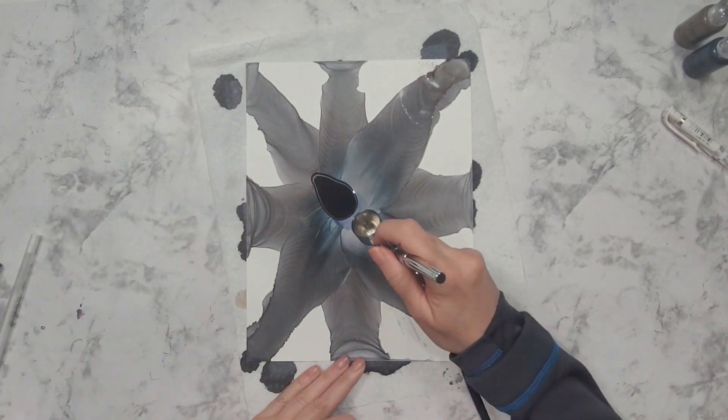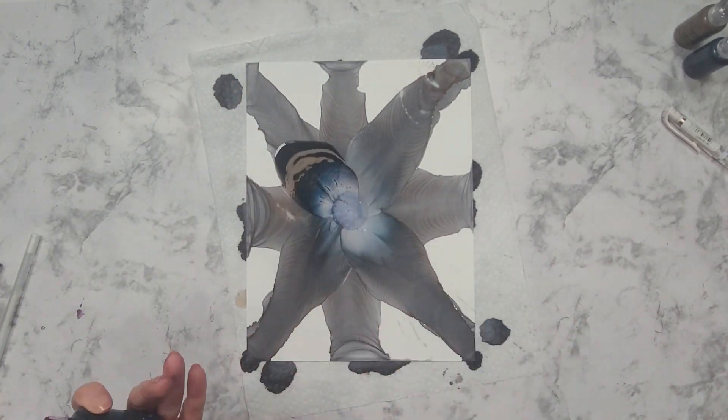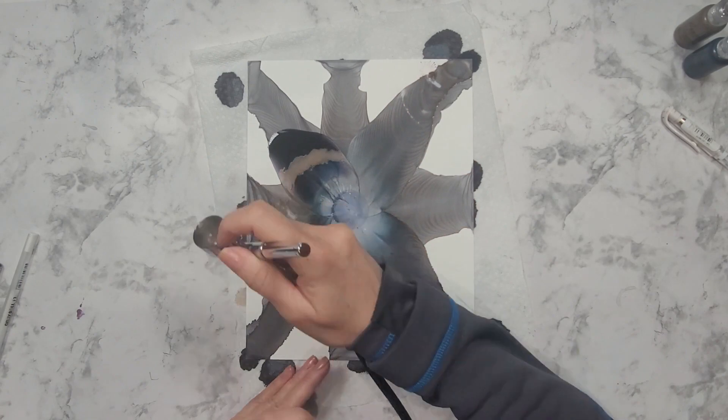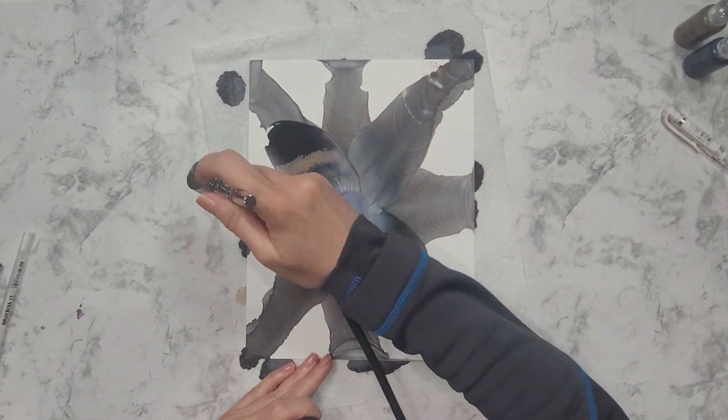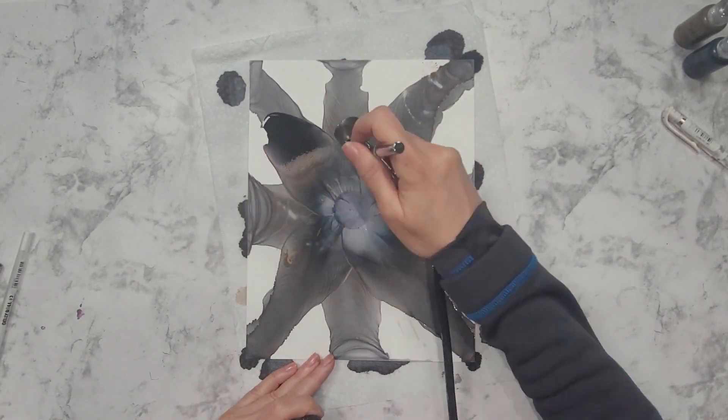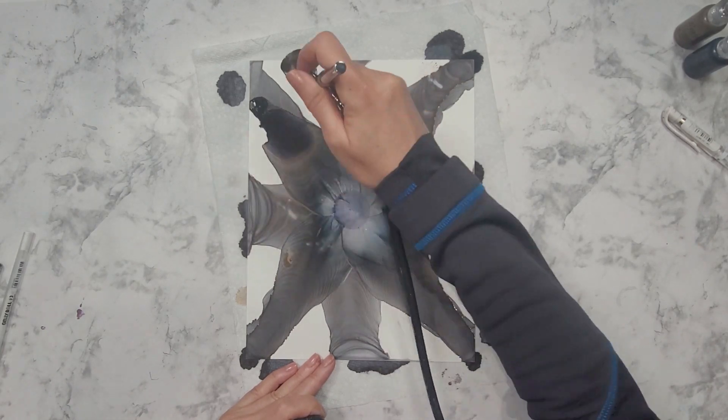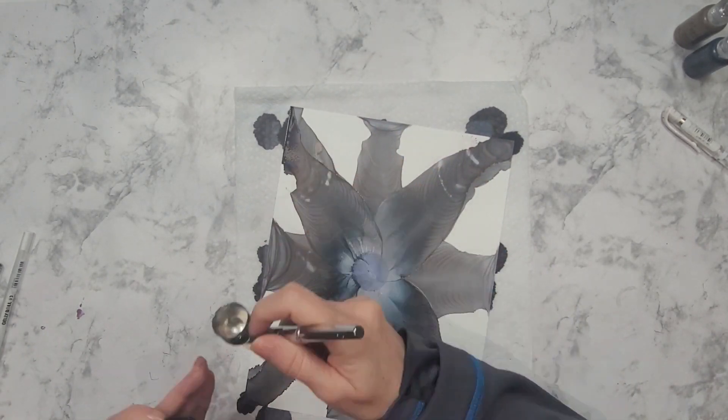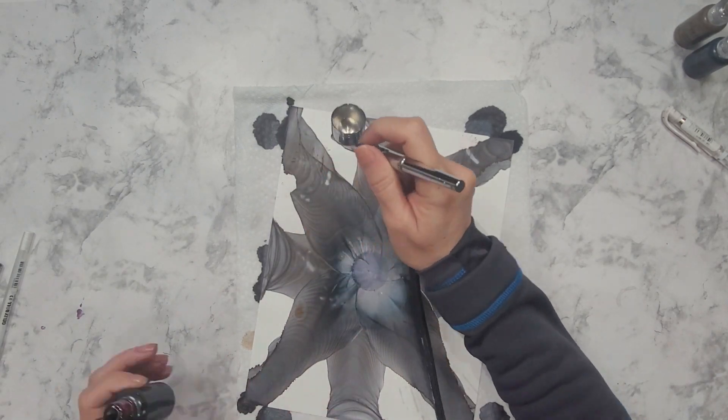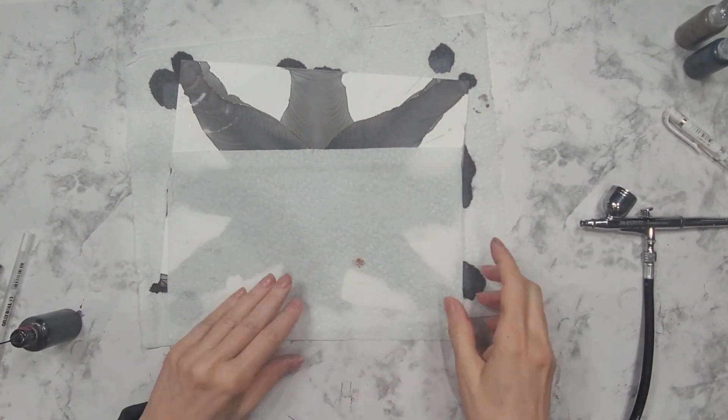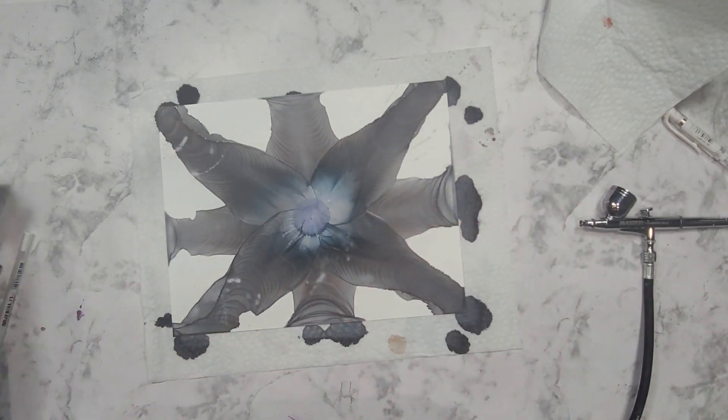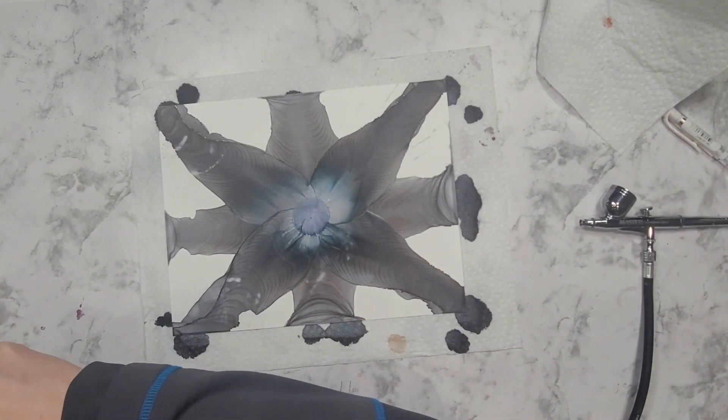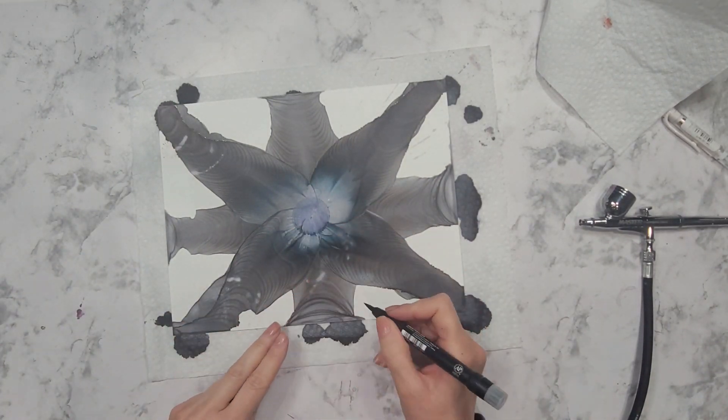And now my airbrush is starting to spit out water. You can see those white marks on the pitch black on the last petal that I blew out. It's really annoying. You can see it's starting to spit out again. They were turning out so beautifully. Now I'm taking a paper towel to try and lift some of that moisture off the paper.